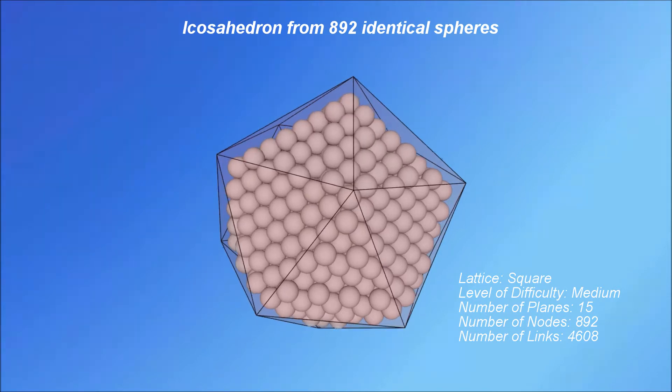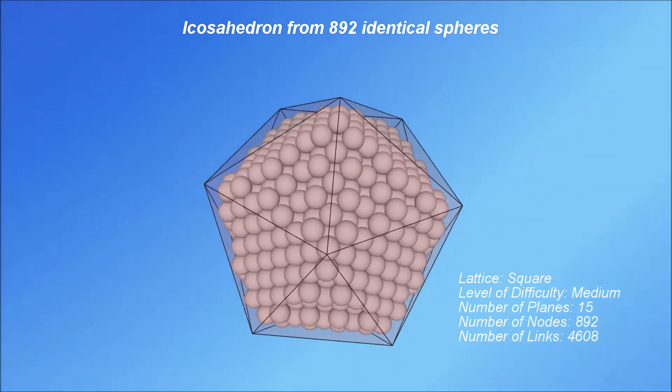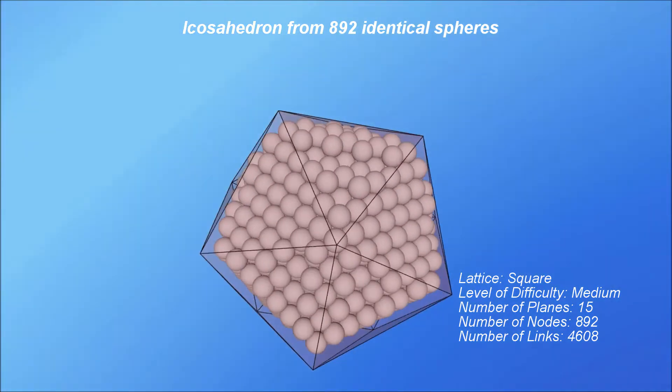For these three solids, even a relatively small number of spheres will give a very well-defined platonic solid.